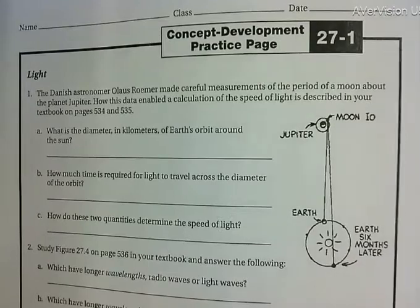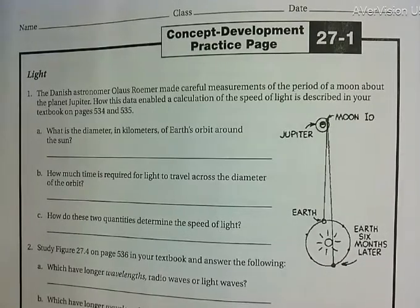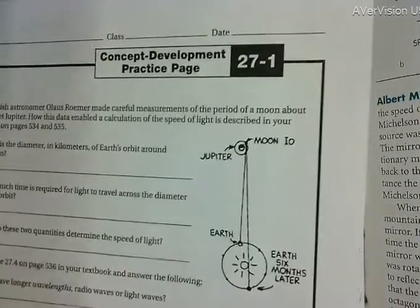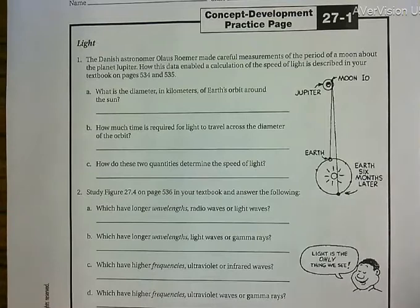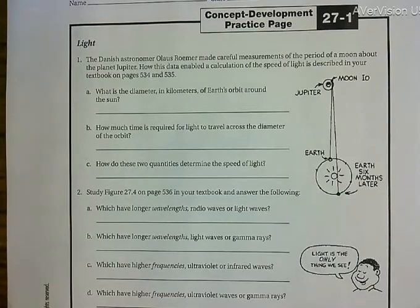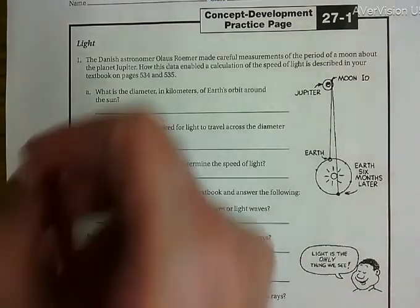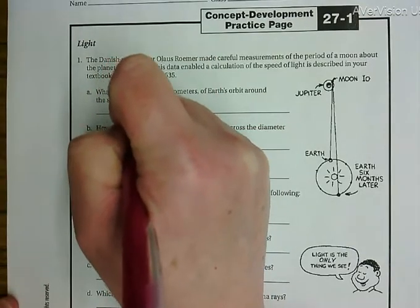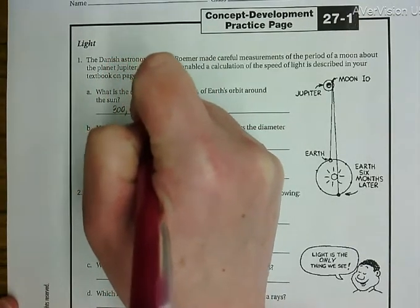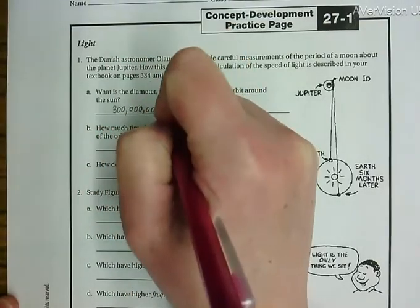The first question asks: what is the diameter in kilometers of Earth's orbit around the sun? This information is in our textbook. They tell you that the Earth's orbit around the sun in diameter is 300,000 kilometers.